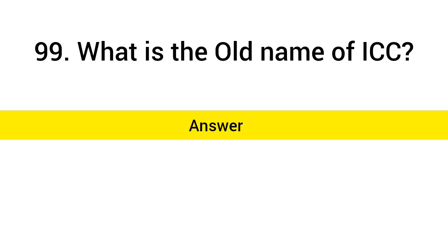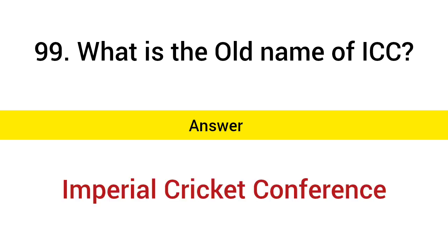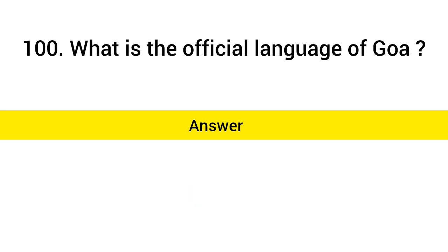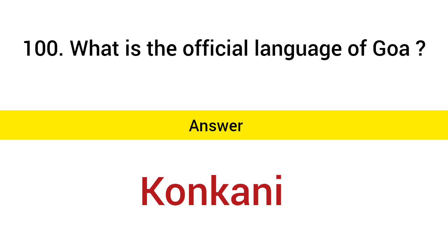What is the old name of ICC? Answer: Imperial Cricket Conference. What is the official language of Goa? Answer: Konkani.